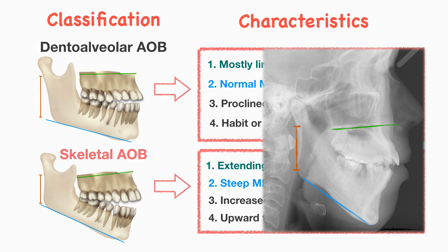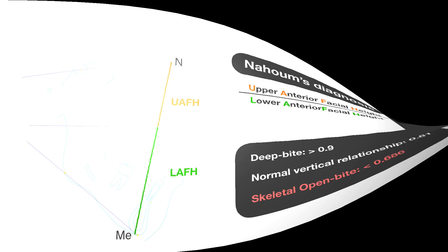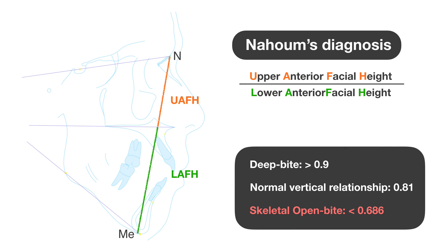Another way to diagnose anterior open bite is the NFLE ratio, which divides the upper anterior facial height by the lower anterior facial height. The ratio of this patient was 0.66, which is less than 0.68, confirming that he indeed had a skeletal open bite.